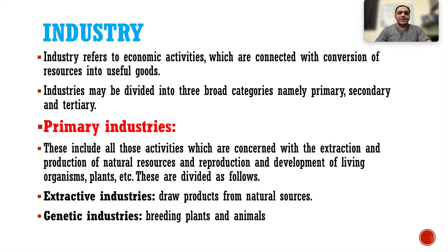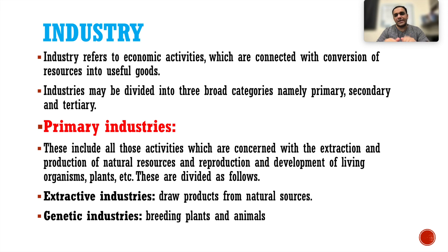Primary industries include all activities concerned with extraction and production of natural resources and the reproduction and development of living organisms such as plants. They are divided into two types: extractive industries, which draw products from natural resources, and genetic industries, which involve the breeding of plants and animals.